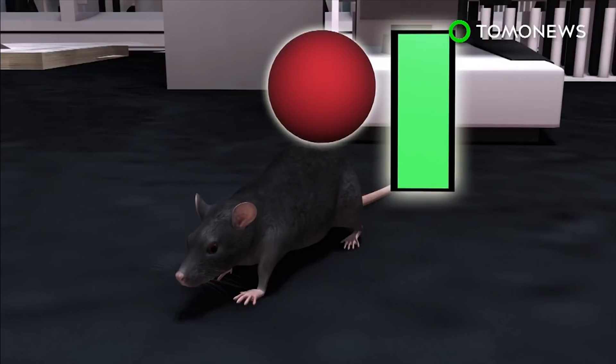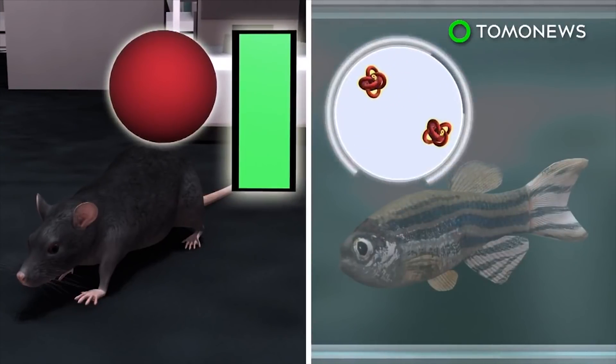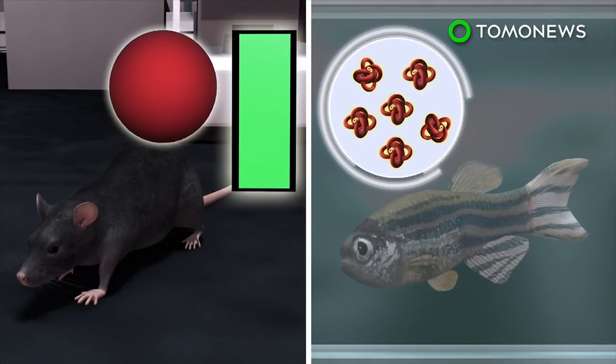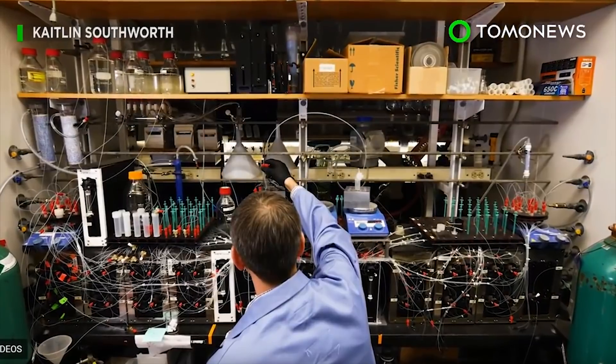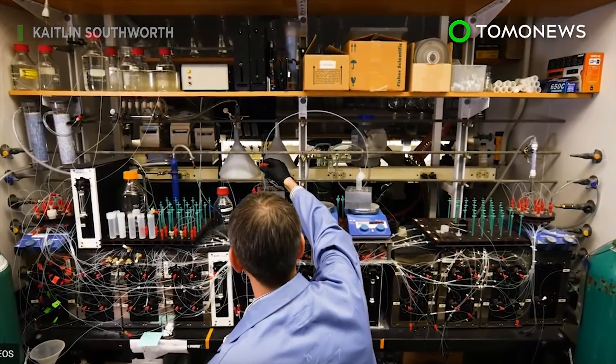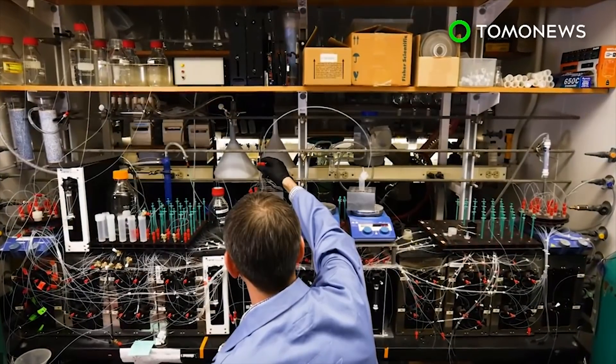Hinokitiol has been tested on animals, where it's been shown to promote iron uptake in the guts of mice and prompt hemoglobin production in zebrafish. In future studies, researchers hope to develop similar drugs to treat transporter protein-related diseases, such as cystic fibrosis and lupus.